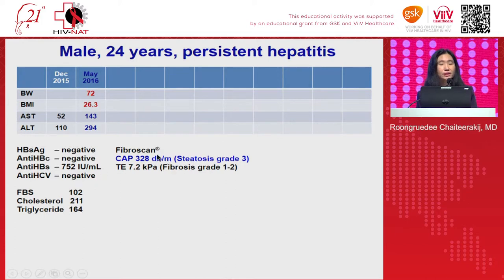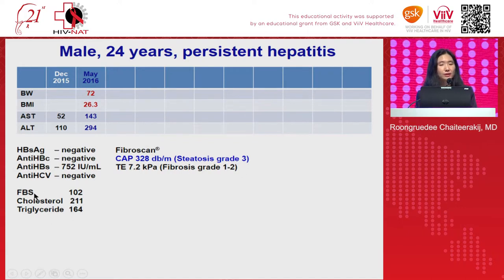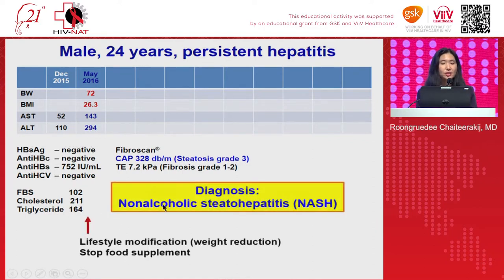We worked up for fatty liver disease. We did a FibroScan and measured the fat content in the liver using the CAP score, which was 328. The normal CAP score is 200, so this was very high, comparable with steatosis grade 3. He had abnormal fasting blood sugar, cholesterol, and triglycerides. Viral hepatitis B and C were negative. So at that time, he was diagnosed with non-alcoholic steatohepatitis.